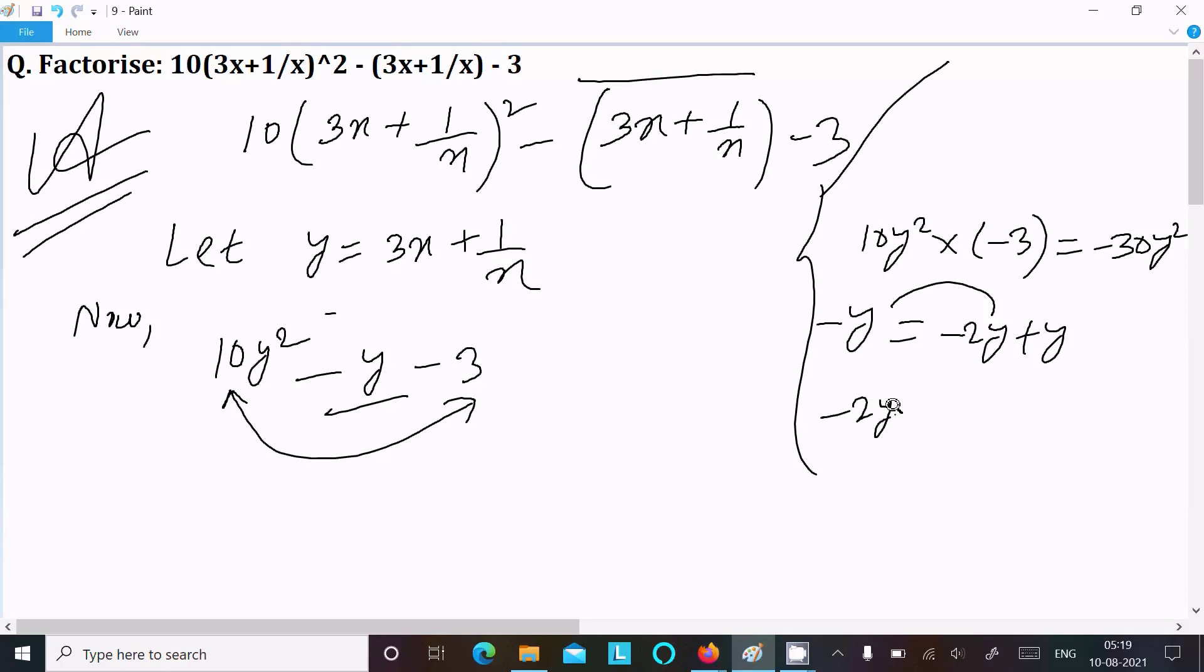Now middle term break into two parts. So we can write minus 2y plus y, it equal to minus y. Now if I multiply minus 2y into y, so it comes minus 2y². These twos are not the same, not equal.